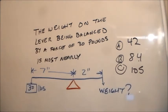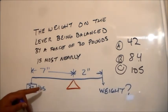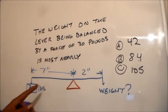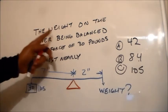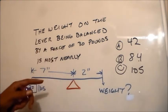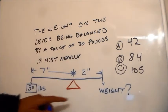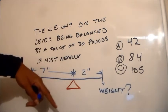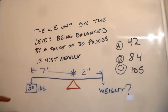Okay, this is very easy. All you simply need to do is look at the balance point. And if this weight on the lever is being balanced by a force of 30 pounds, you want to know what weight is here to make this thing not tip down on this side or down on that side.